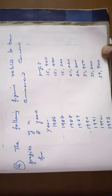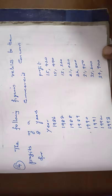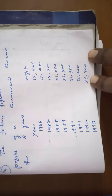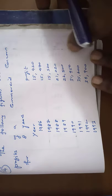Exercise 9.1, sum number 14. The following figures relate to the profits of a commercial concern for eight years. The figures are taken in 1986 to 1993. The corresponding profit values are given.